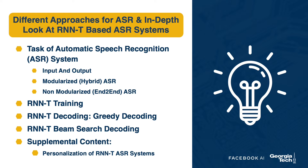This lecture will be divided into small modules. We would first look at the task of speech recognition, where we would look at what is the input to ASR and what is the expected output. We would look at two different paradigms to build ASR systems: modularized or non-modularized paradigms. We would then look at RNNT training, RNNT greedy decoding, and RNNT beam search decoding. There will also be supplemental content on personalization of RNNT ASR systems in the slides.